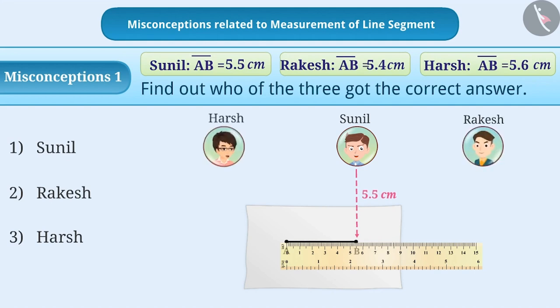Rakesh is sitting on the right and Harsh is sitting on the left of Sunil. So the position of the eye is not exactly above the mark of the ruler. Therefore, Rakesh got 5.4 cm and Harsh got 5.6 cm length, which is wrong.